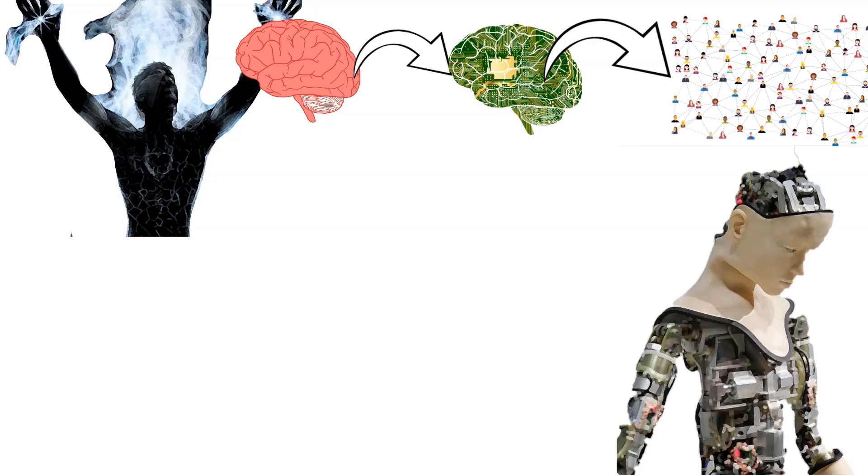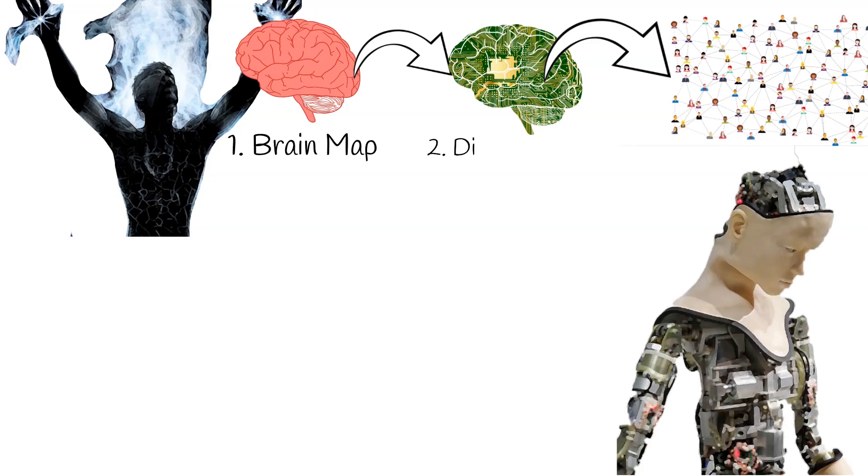First, we need to create whole brain map, and then make digital copy of it. The digital copy of brain may have long-term memory, thinking capabilities, and self.